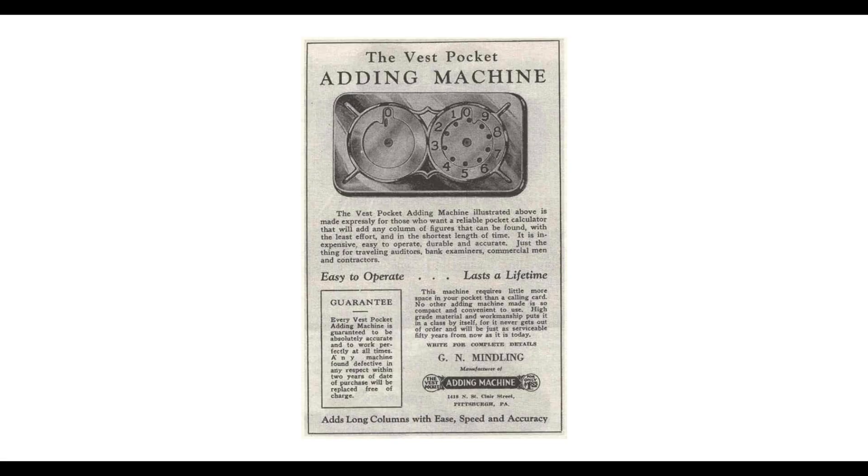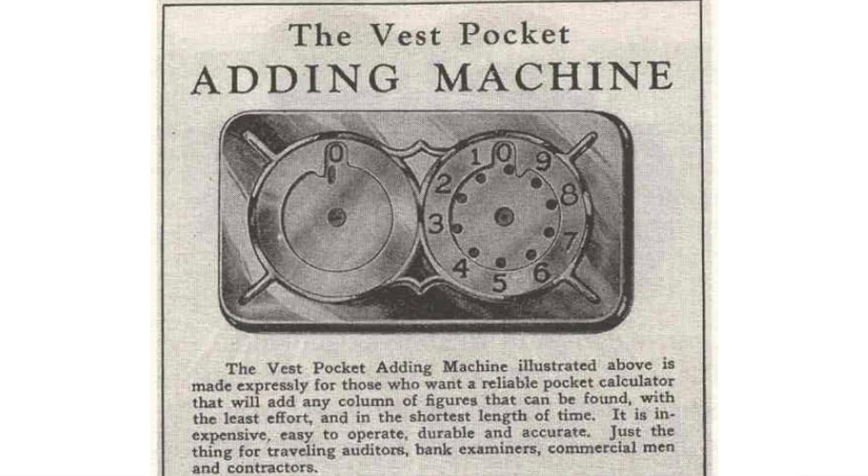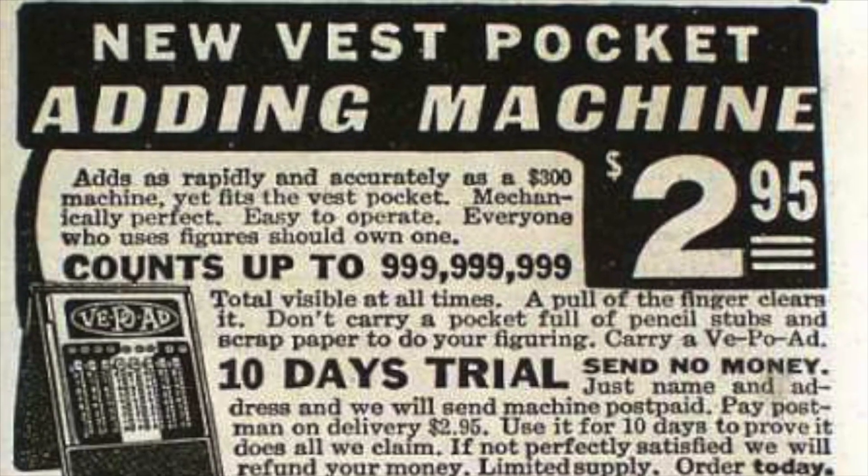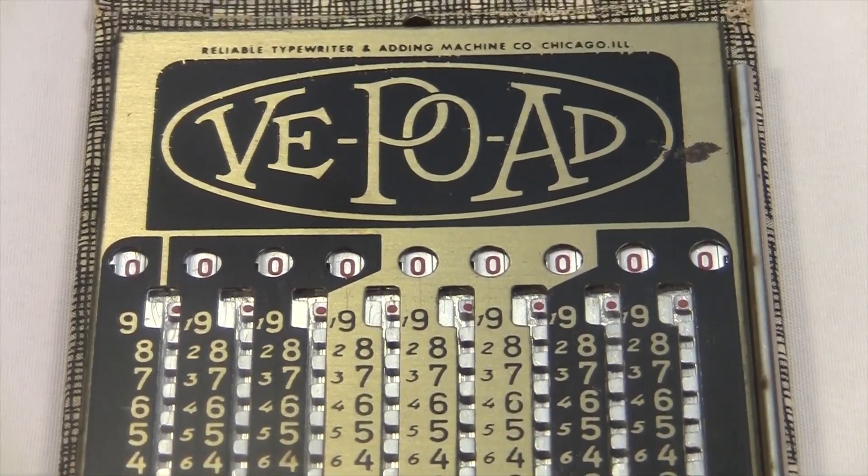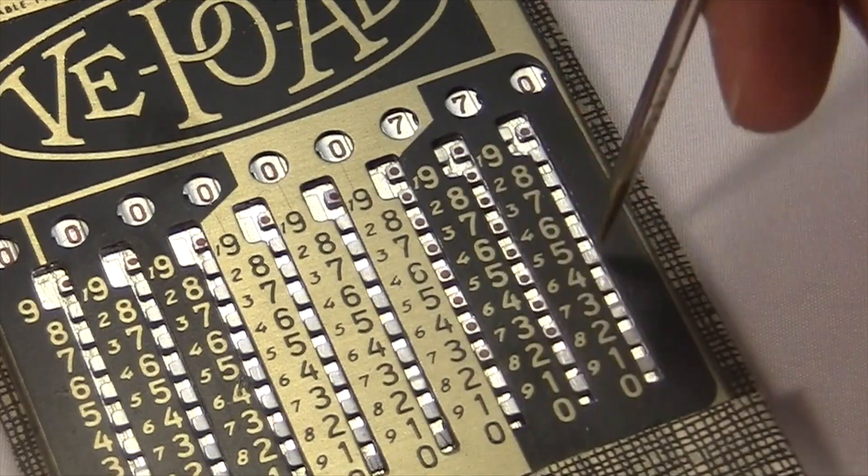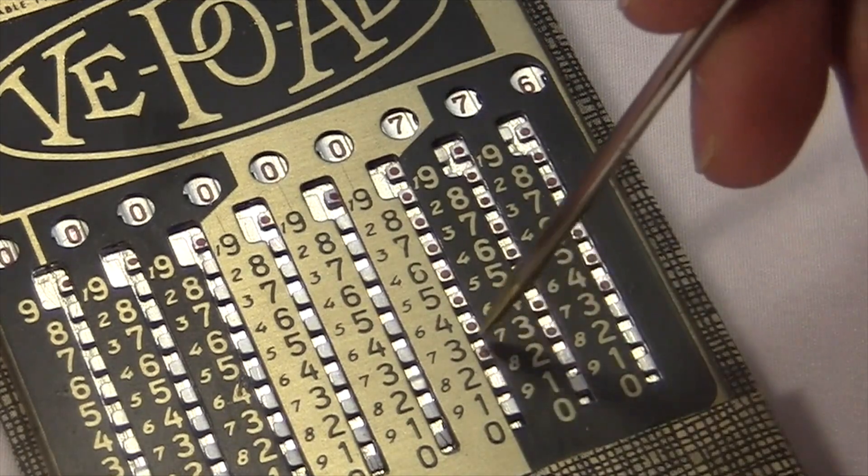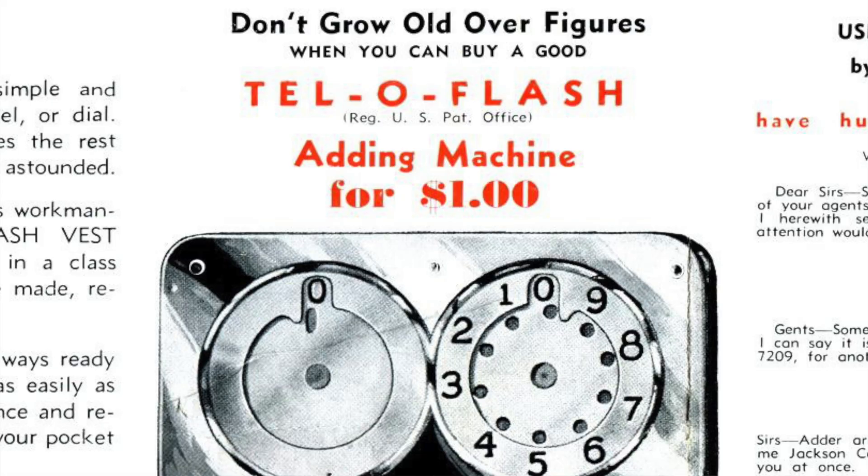The design got ripped off and sold in one form or another from the 1870s into the 1920s. One outfit in Pittsburgh called it the Vest Pocket Adding Machine, and this was apparently unrelated to the Vpo ad, which came out around the same time. I made a video about the Vpo ad a while back, and I called it the stupidest name ever for an adding machine. But I was at that time unaware of one of the Stevenson knockoffs, the Tell-O-Flash.